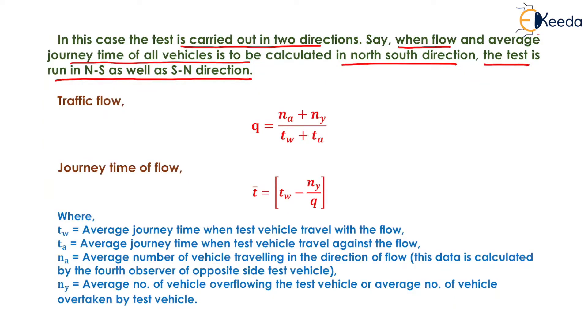If we want to determine the traffic flow, then it will be equals to Na plus Ny upon Tw plus Ta, where Na is the average number of vehicle traveling in the direction of flow. This data is calculated by the fourth observer of the opposite side test vehicle, which counts the number of vehicle moving from the opposite direction. Ny is the average number of vehicle overtaking the test vehicle minus average number of vehicle overtaken by test vehicle.